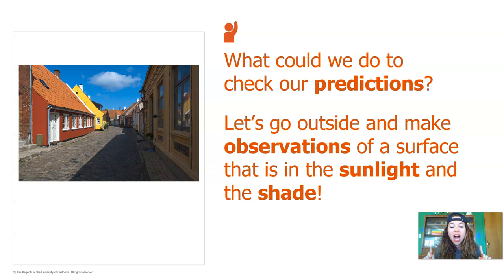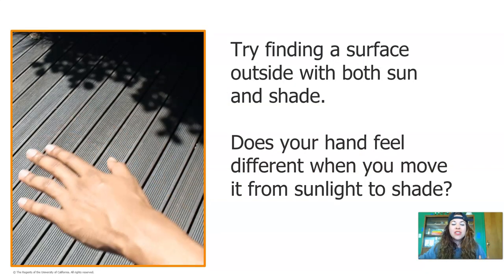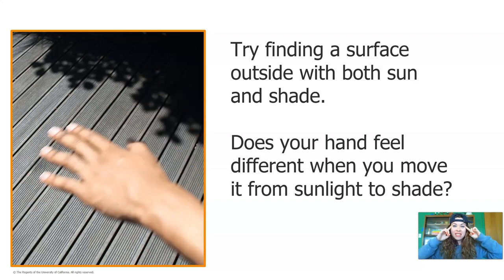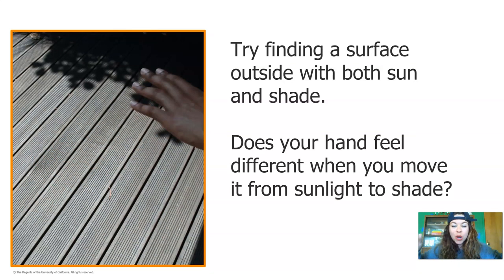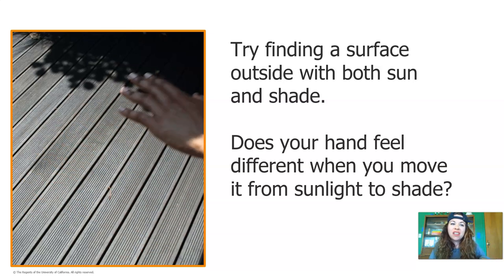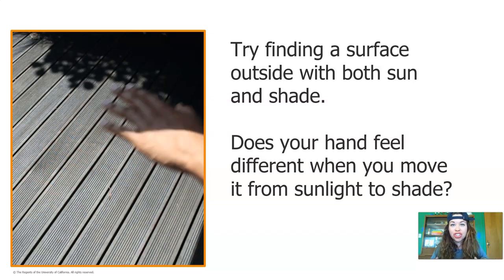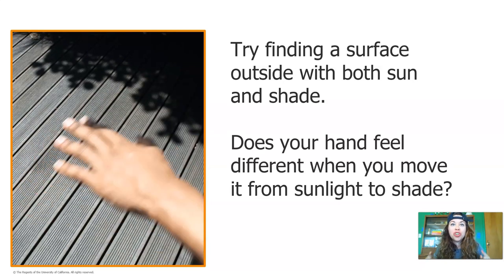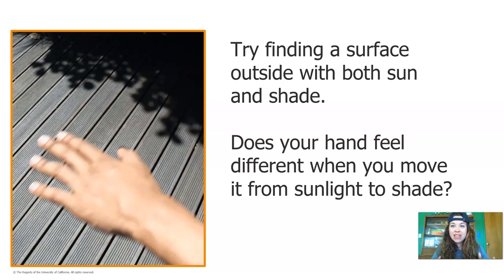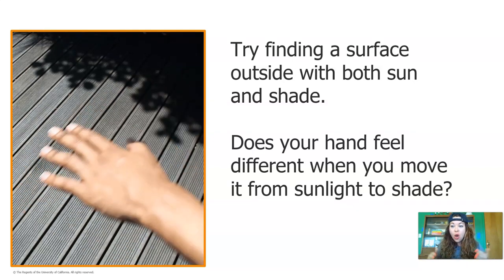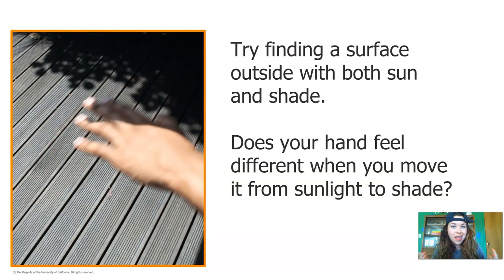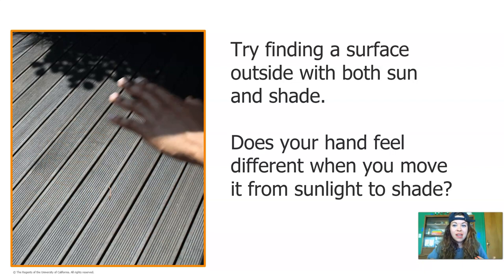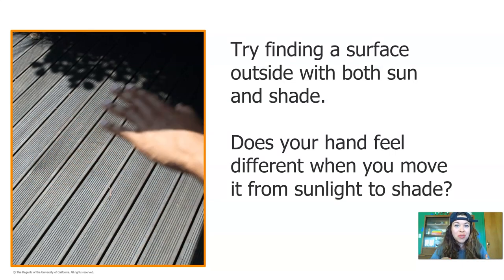Let's go outside and make observations of a surface that is in the sunlight and in the shade. I want you to think of a place — a surface outside of your home — that might have sun and shade at the same time, just like the street we looked at. When this video is over, go outside and try to find a place that has sun and shade. Or you can pause the video right now and do that. I'm going to do this at my house too, so you can follow along.